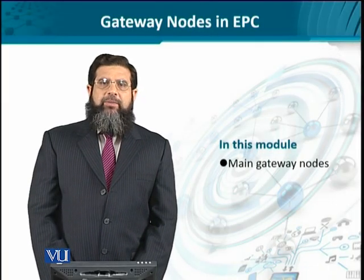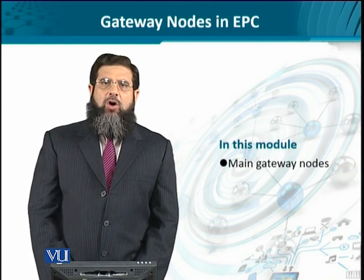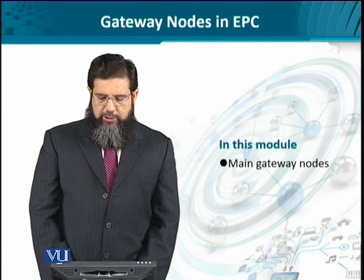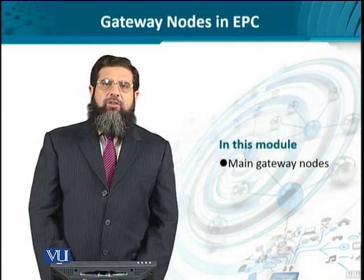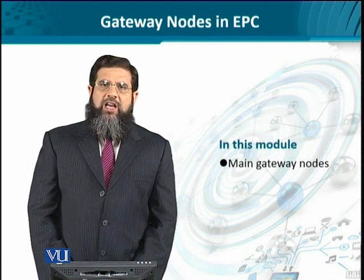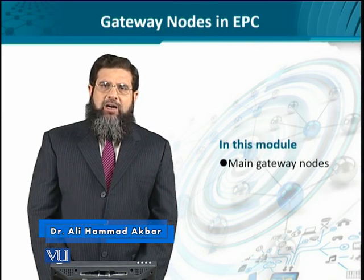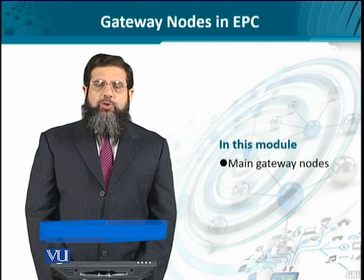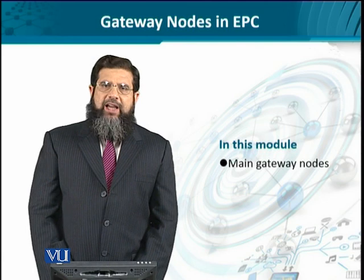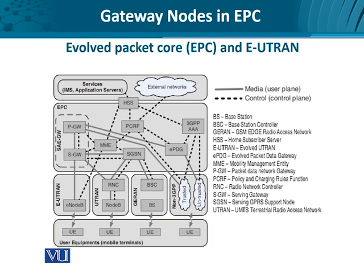We are going to look at the inside of the Evolved Packet Core in terms of the gateway nodes and the control nodes. The control nodes are used for controlling the connection establishment for the caller and called party, while gateways provide connectivity to the external network. We'll look at the most important gateways, including the Mobility Management Entity, the Packet Gateway, and the Home Subscriber Server.